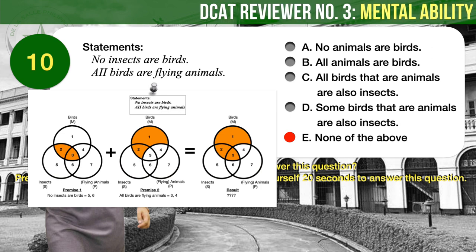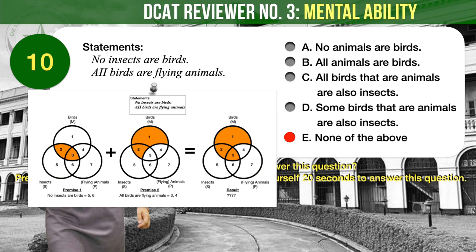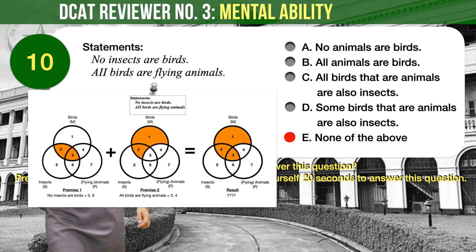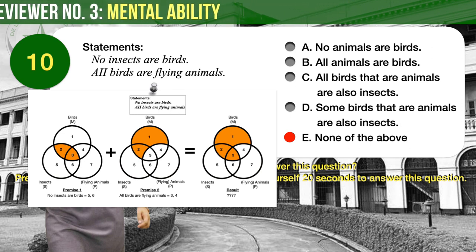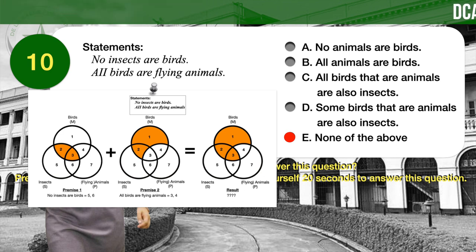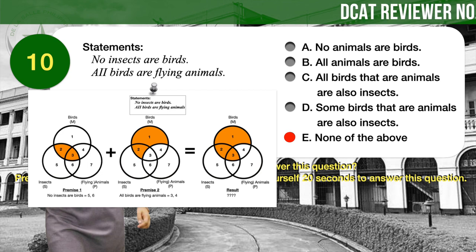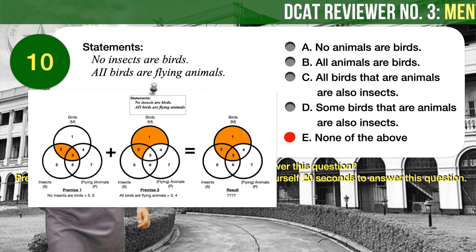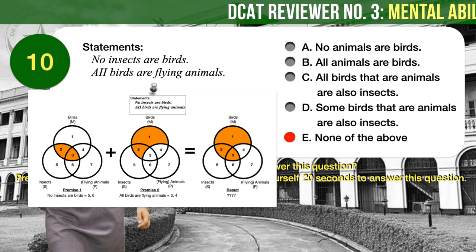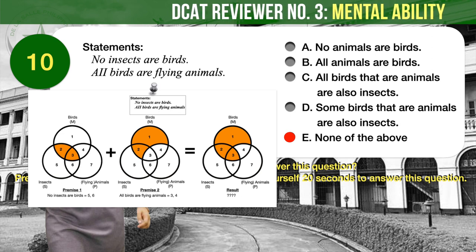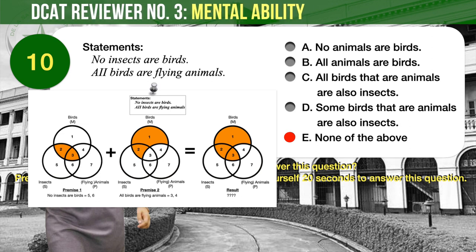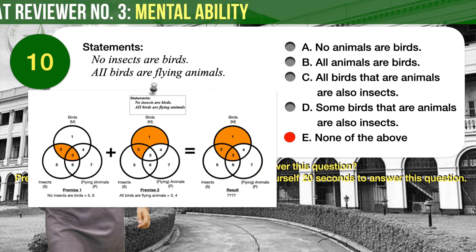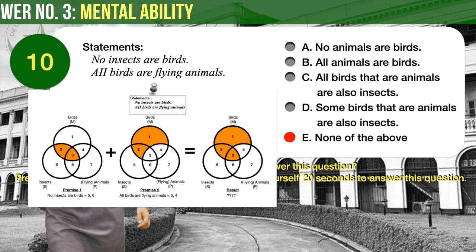Take note that many logical reasoning problems, particularly syllogisms, are best answered with the help of Venn diagrams. Although it is possible to solve syllogisms without Venn diagrams, using them is the easiest, fastest, and most consistent approach. It is highly recommended that you learn how to use Venn diagrams — check the suggested link in the description for a video tutorial on solving logical reasoning problems.